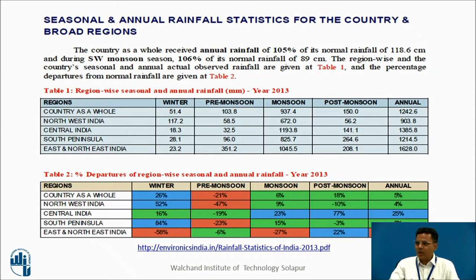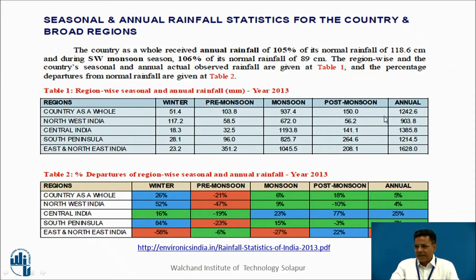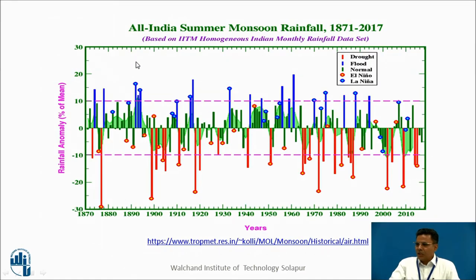Seasonal and annual rainfall statistics are published for the country and broad regions. This gives us an idea about winter rainfall, pre-monsoon rainfall, monsoon rainfall, post-monsoon rainfall, and annual rainfall for different regions.